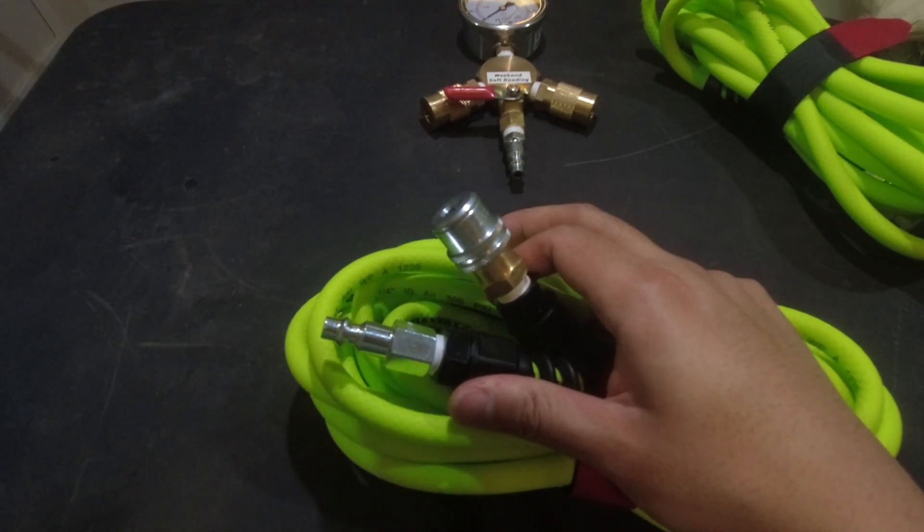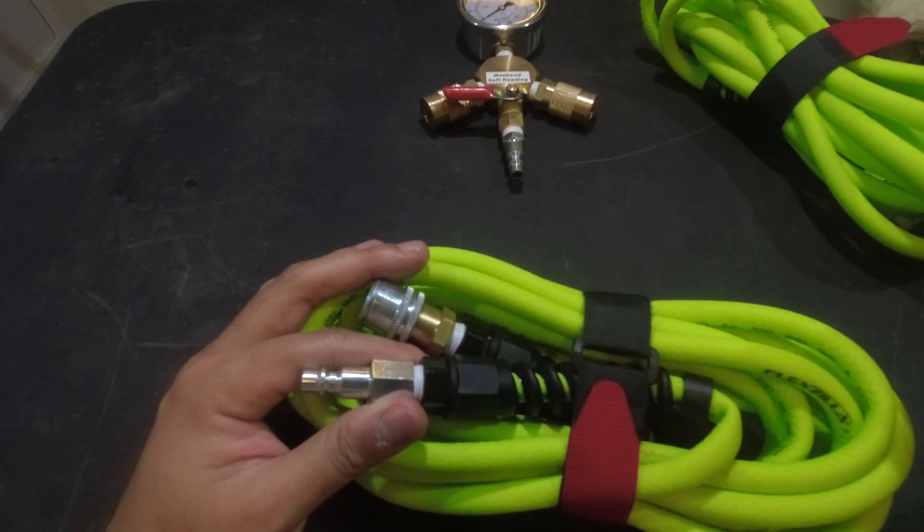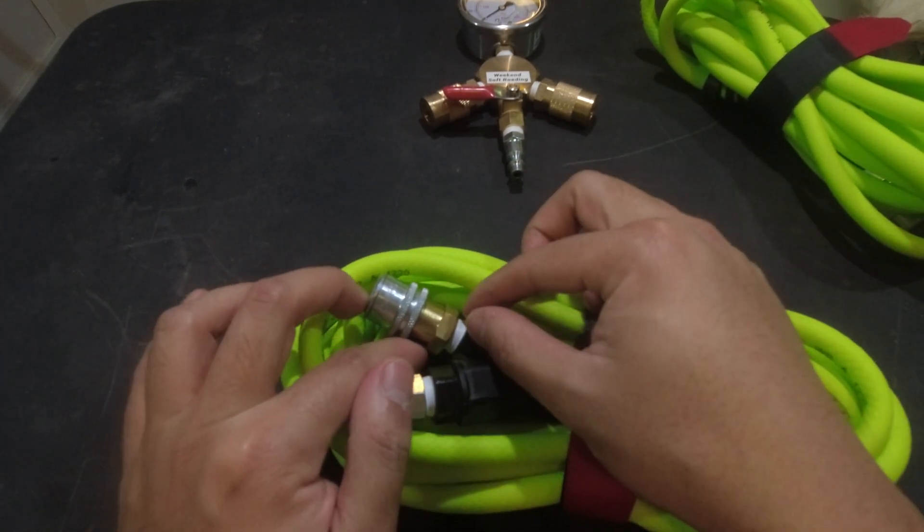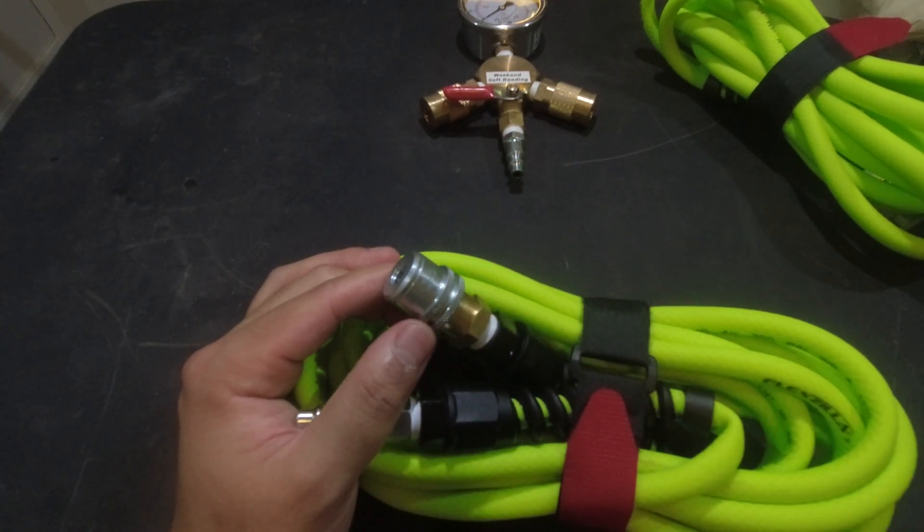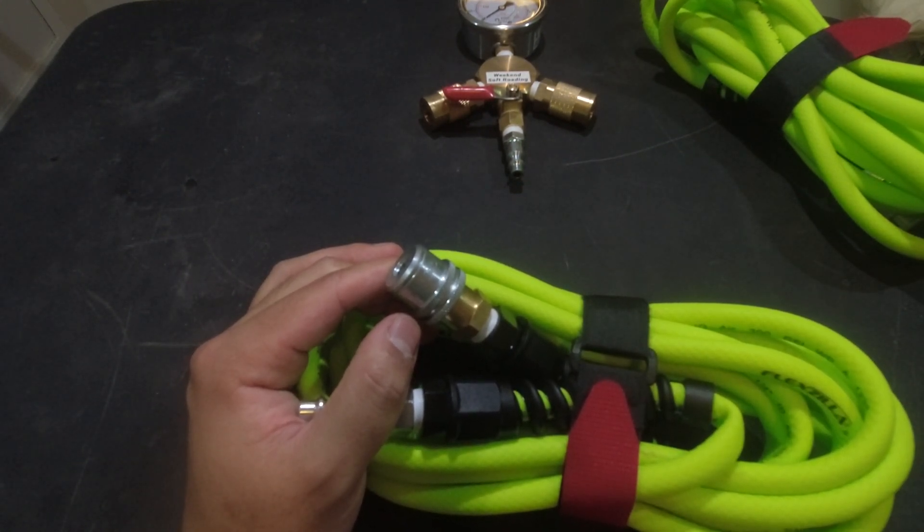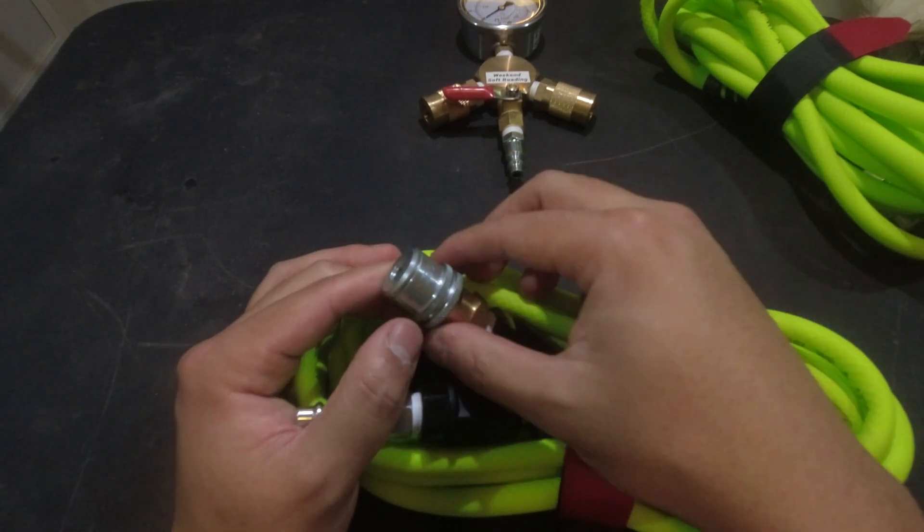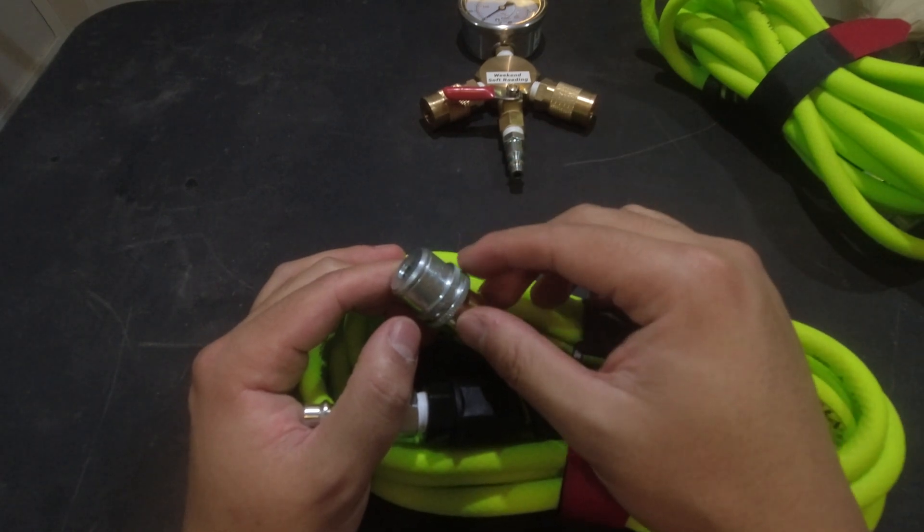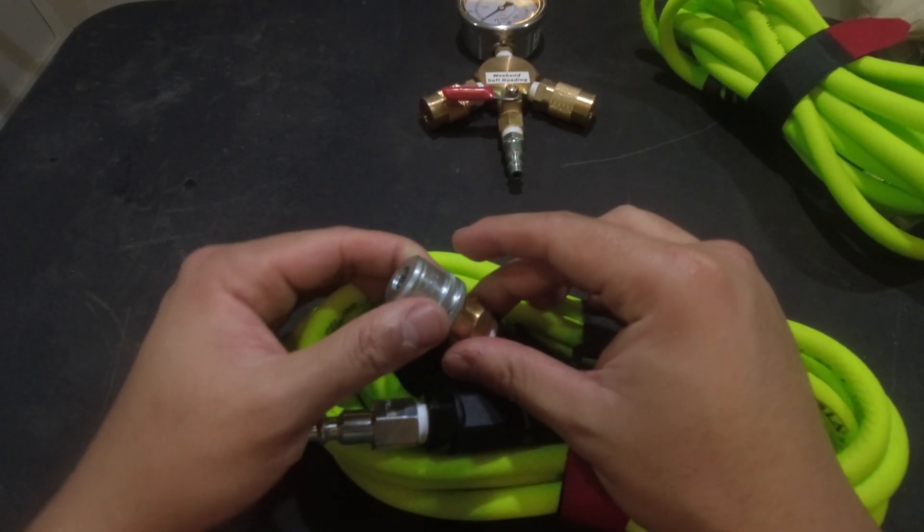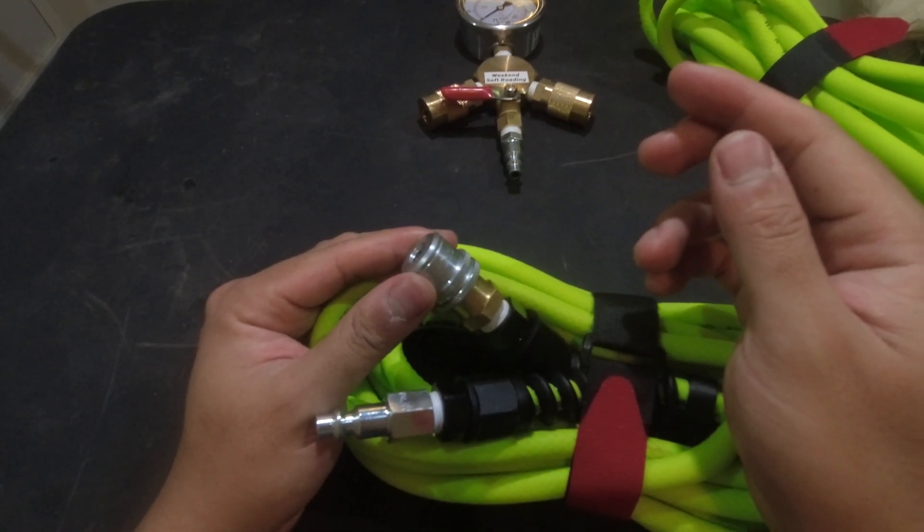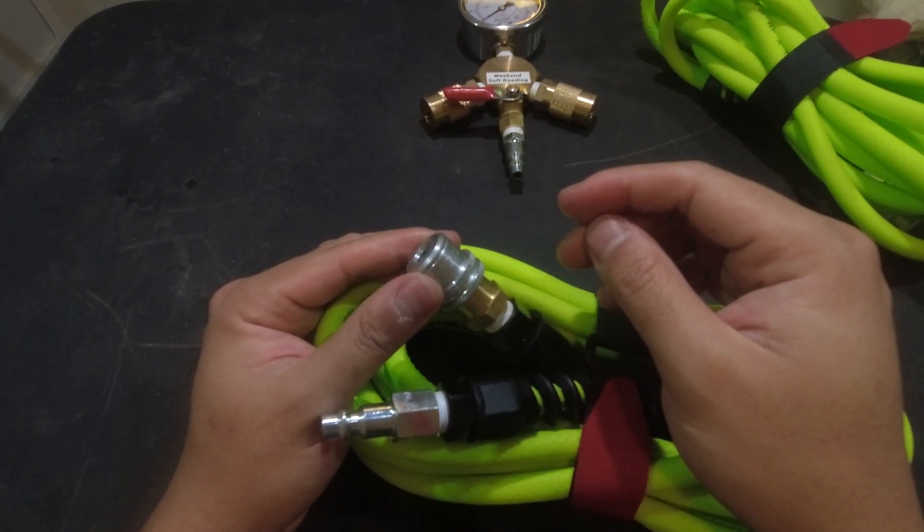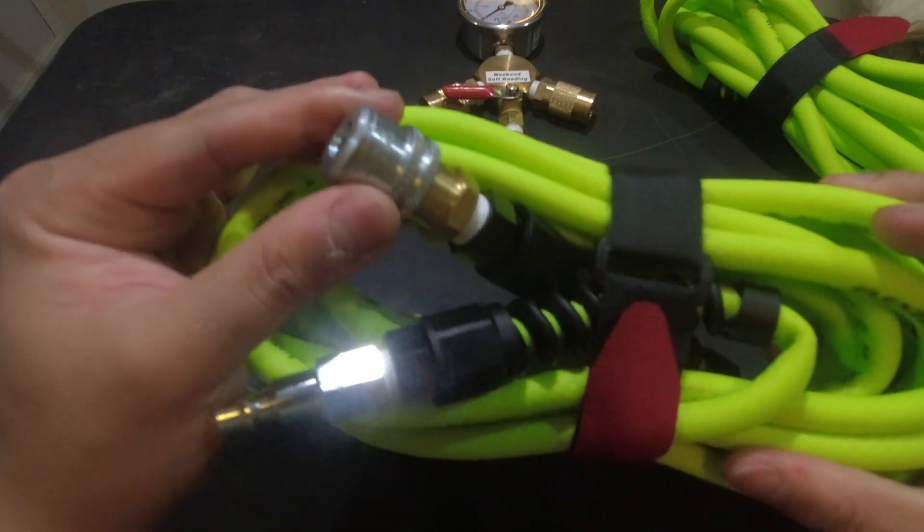What I like about this is if I plug this into the manifold, air is not going to come out. The reason is this air chuck is a closed system, meaning if it's not locked onto a tire chuck it won't release any air until you lock it onto a truck. That's what I liked about it.